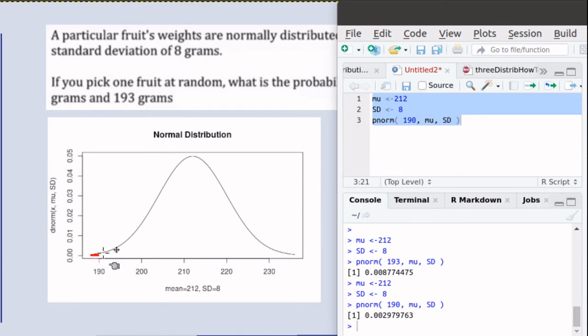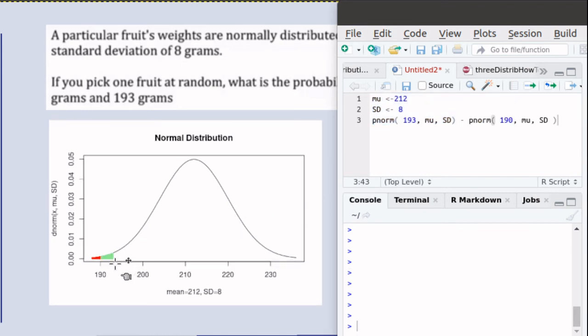To find the probability that we're looking for, we need to find PNORM of the green area which goes on forever down that tail, minus the PNORM of 190, which is that red part.